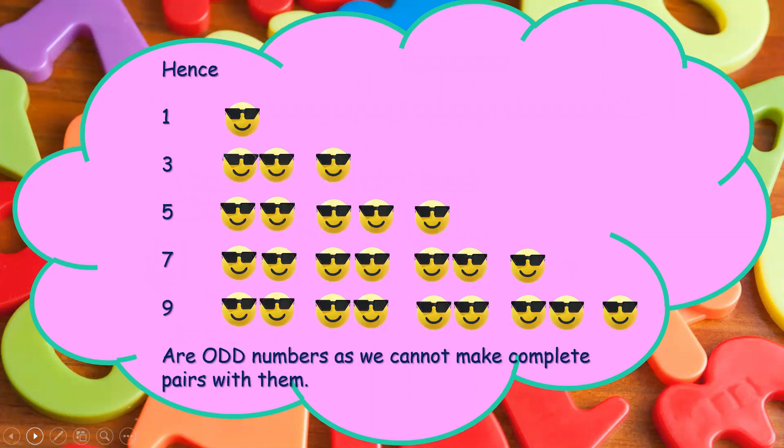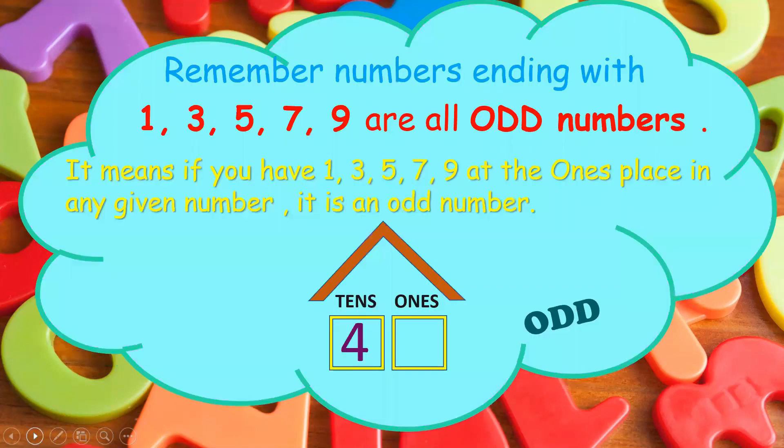Remember, 1, 3, 5, 7 and 9 are odd numbers.